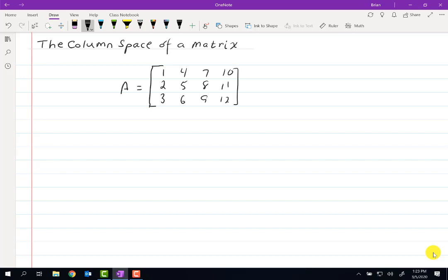Now the columns, as you can see, we have four columns 1, 2, 3, 4. The column space for A is defined as the span of the vectors that make up the columns of the matrix.